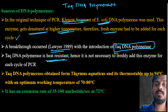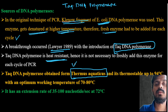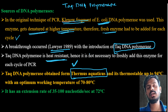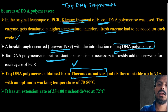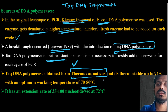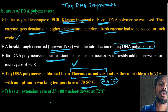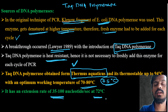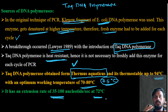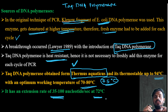Taq DNA polymerase is obtained from the species Thermus aquaticus — this species name is very important to remember. It is stable up to 94 to 95 degrees centigrade. Optimum temperature is 70 to 80 degrees, with exact optimum around 75 degrees. It has an extension rate of 30 to 100 nucleotides per second at 72 degrees centigrade — it adds 35 to 100 nucleotides to the newly synthesized strand.